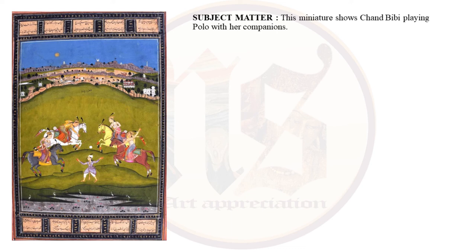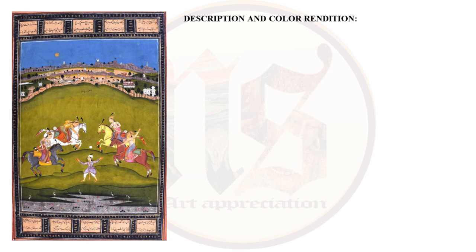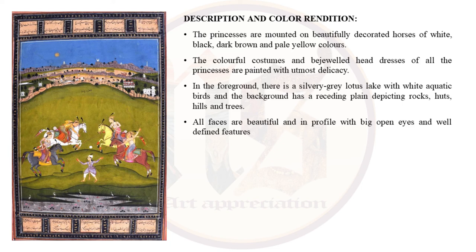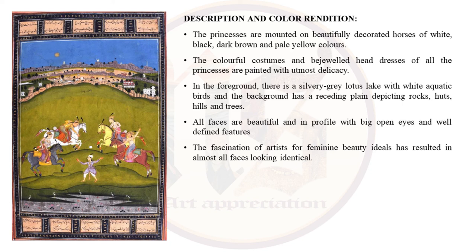The princesses are mounted on beautifully decorated horses of white, black, dark brown and pale yellow colors. The colorful costumes and jeweled headdresses of all the princesses are painted with beautiful delicacy. In the foreground there is a silvery grey lotus lake with white aquatic birds, and the background has a receding plain depicting rocks, huts, hills and trees. Chand Bibi is riding the white horse and her companions are on the other horses. All faces are beautiful, in profile, with big open eyes and well-defined features — sharp nose, full lips and softly curving chin. The fascination with feminine beauty ideals from literature has resulted in almost all faces looking similar.